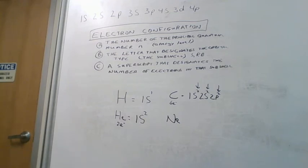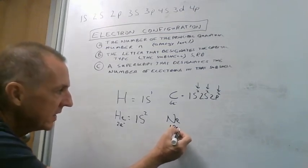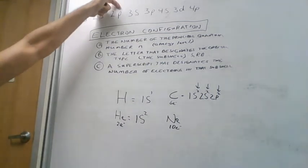Neon is element number two, four, six, eight, ten. So we have ten electrons we have to put into orbitals. We could fit two here, two here, and six here.